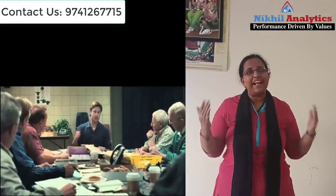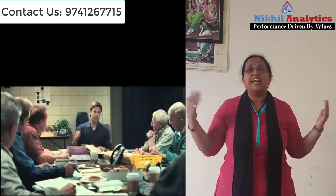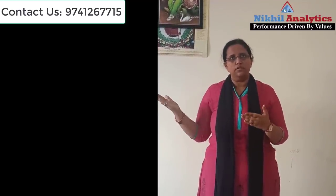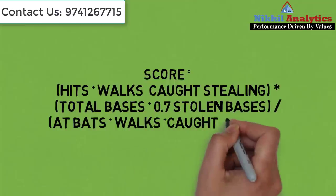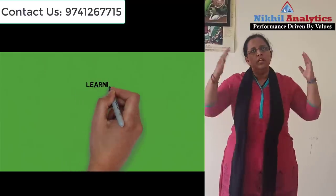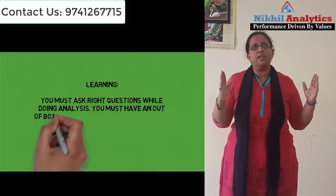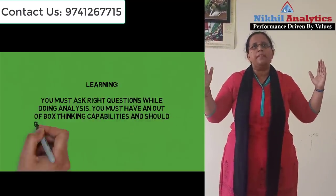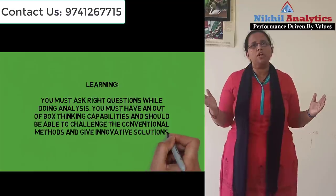Players were overlooked for a variety of biased reasons and perceived flaws such as age, appearance, personality, and even average or ugly-looking girlfriends. Peter used the formula given by mathematician Bill James to score different baseball players — the higher the score, the better the player. The learning for you: you must ask the right questions while doing analysis, challenge conventional methods, and have out-of-the-box and innovative thinking to come up with solutions that may not have existed before.